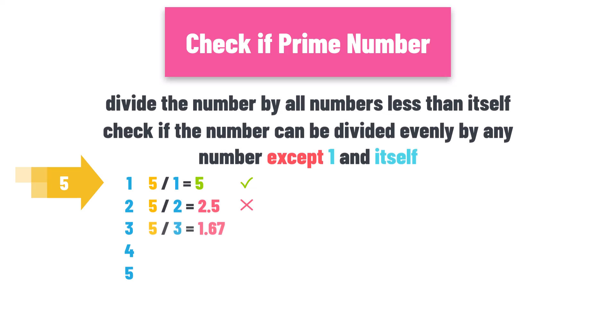5 divided by 3 is 1.67. It cannot be divided evenly. 5 divided by 4 is 1.25. It cannot be divided evenly.